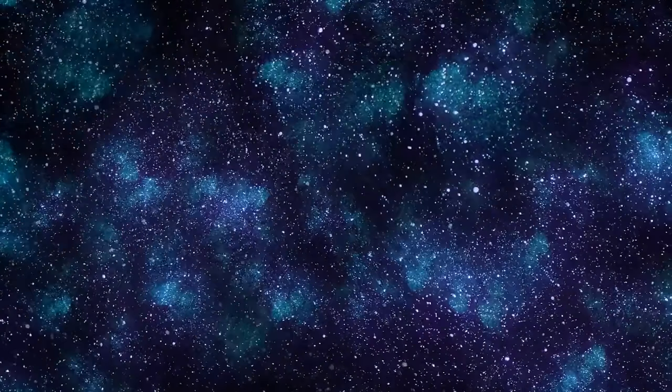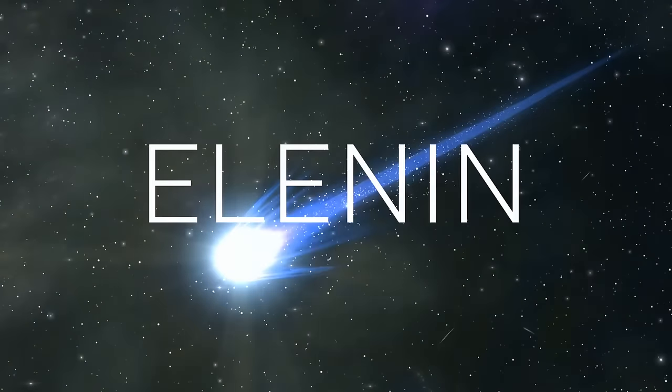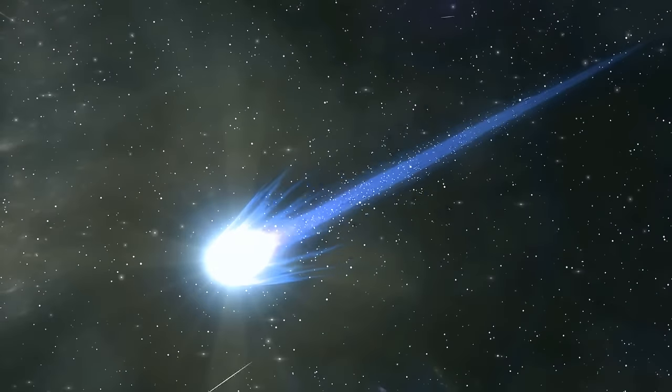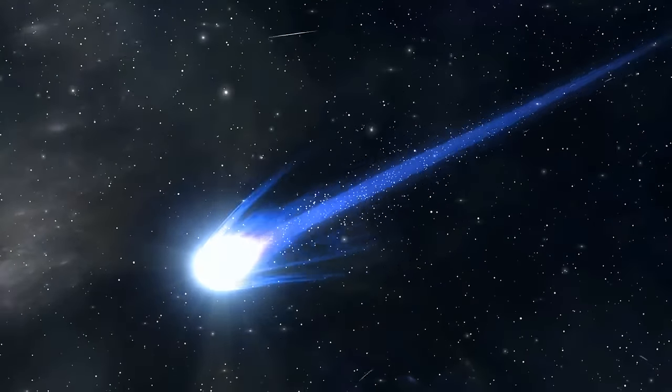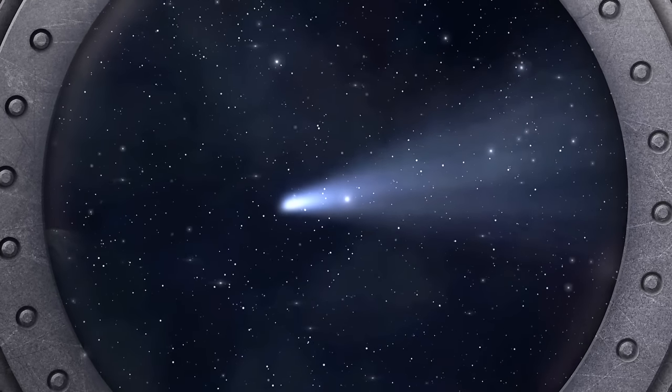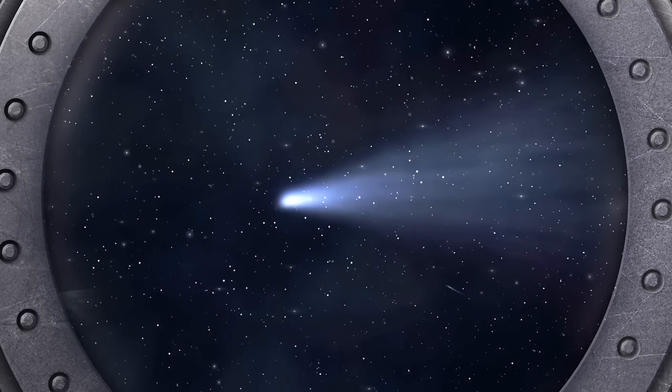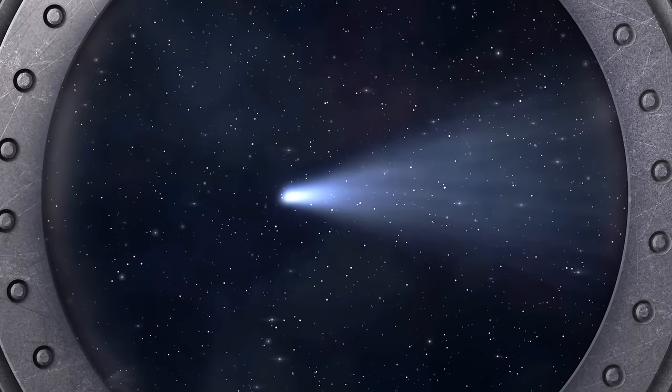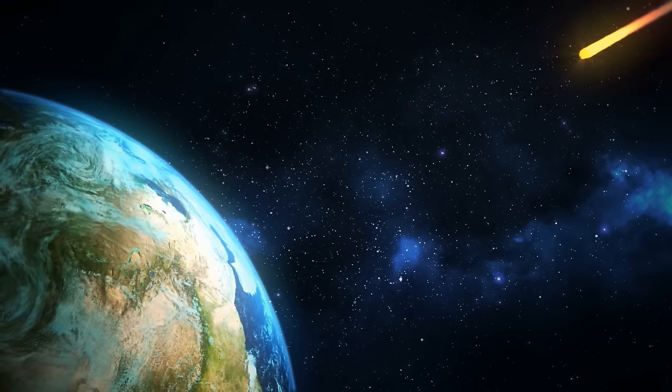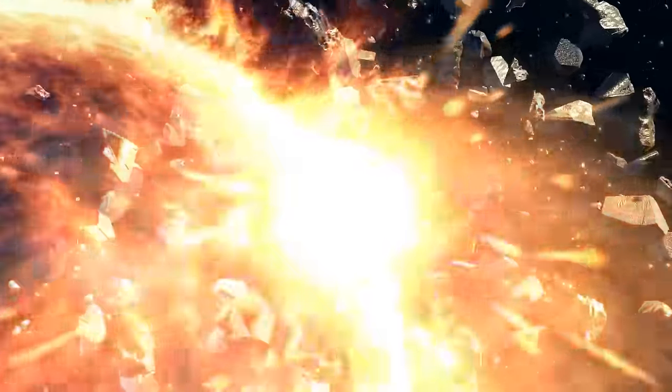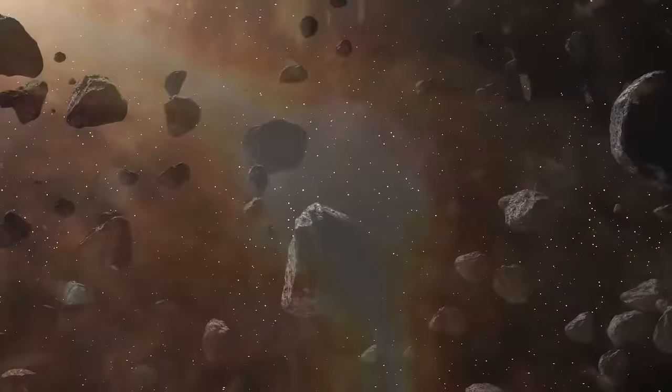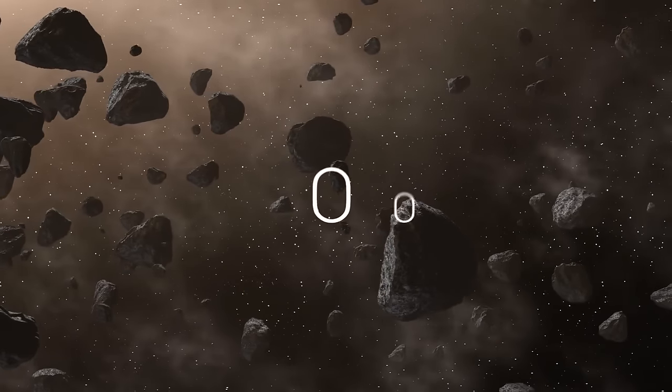In 2011, a comet named Elenin appeared that many people thought could be Nibiru. But when you're looking at comets and planets through a telescope, you see they appear differently. A comet has a coma, which is a gas atmosphere, together with a tail, something a planet doesn't have. Plus, this comet didn't slam into the Earth. It came too close to our Sun and fell apart. The leftover pieces will continue moving on their way to the outer solar system for the next 12,000 years.